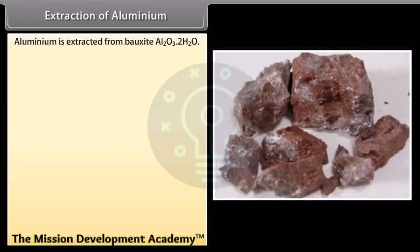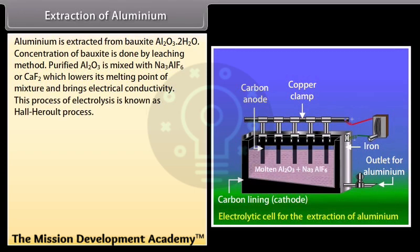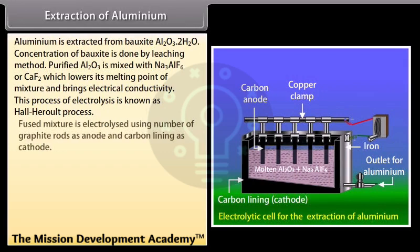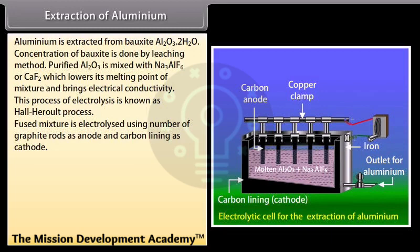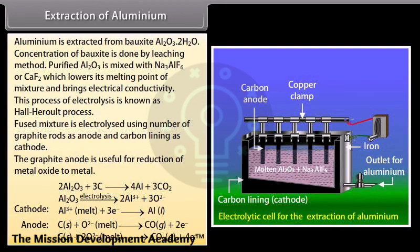Extraction of aluminium. Aluminium is extracted from bauxite Al2O3 2H2O. Concentration of bauxite is done by leaching method. Purified Al2O3 is mixed with Na3AlF6 or CAF2 which lowers its melting point of mixture and brings electrical conductivity. This process of electrolysis is known as Hall-Herald process. Fused mixture is electrolyzed using number of graphite rods as anode and carbon lining as cathode. The graphite anode is useful for reduction of metal oxide to metal.